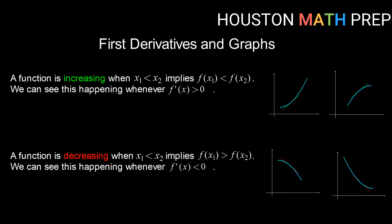We know the definition of a function increasing is that when we have an x1 that is less than x2, that implies that the y value f(x1) will also be less than the y value f(x2). Or more simply, as we move from left to right, the y values are going up or increasing. We can also see this based upon derivative values or tangent line slopes. Both of these example functions are increasing because tangent lines would have a positive slope. So f'(x) greater than zero indicates an increasing function.